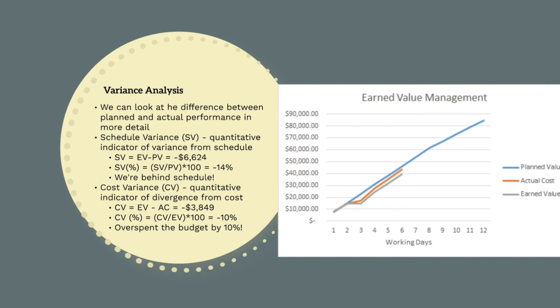Now we've calculated our PV, AC and EV, we can analyse the difference between planned and actual performance in more detail. The two key metrics we'll calculate are schedule variance and cost variance. Schedule variance tells us how we are performing in relation to the schedule baseline, and cost variance tells us how we are performing compared to the cost baseline. Schedule variance, known as SV, is the difference between our earned value and our planned value — so how much work we've actually completed minus how much we said we would complete. For our project, SV is minus $6,624, so we've completed almost $7,000 less work than we said we would. As a percentage, we can divide schedule variance by the planned value and work out we're 14% behind schedule.